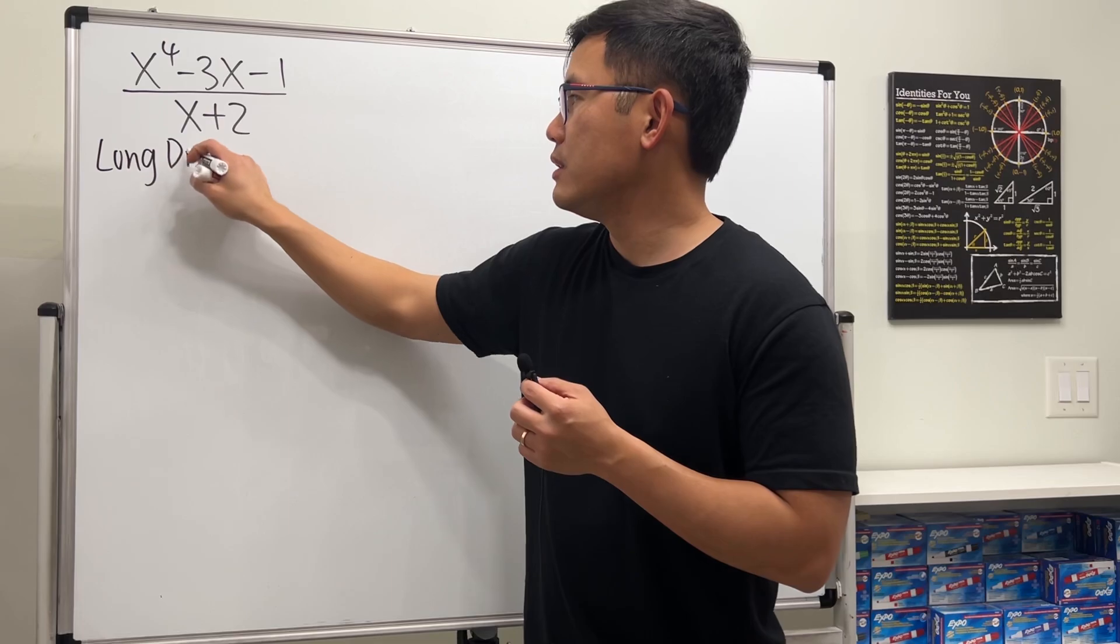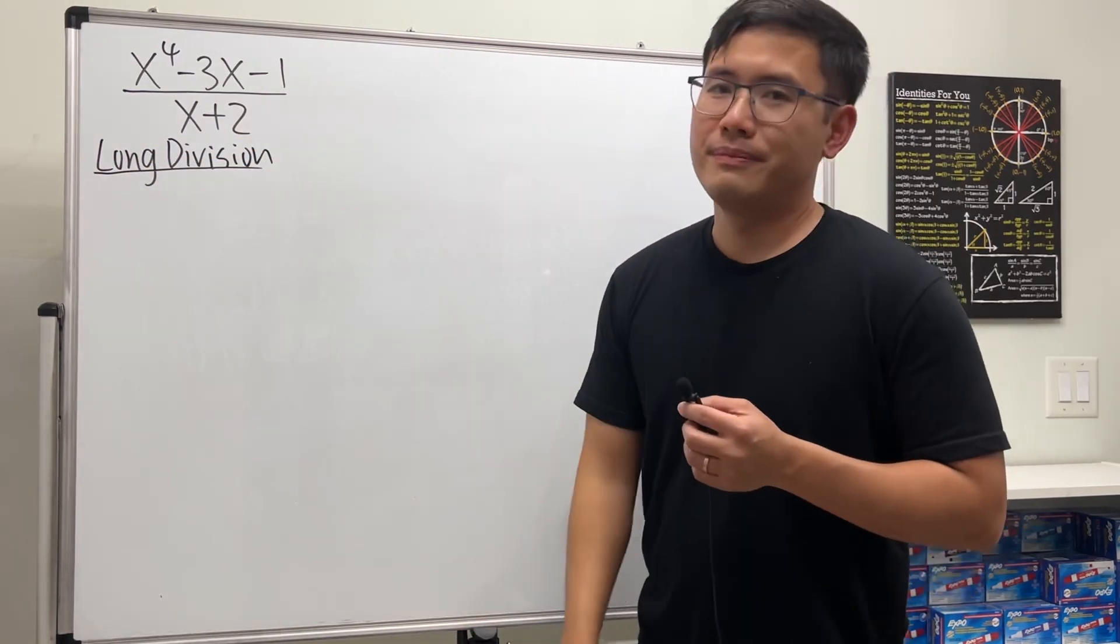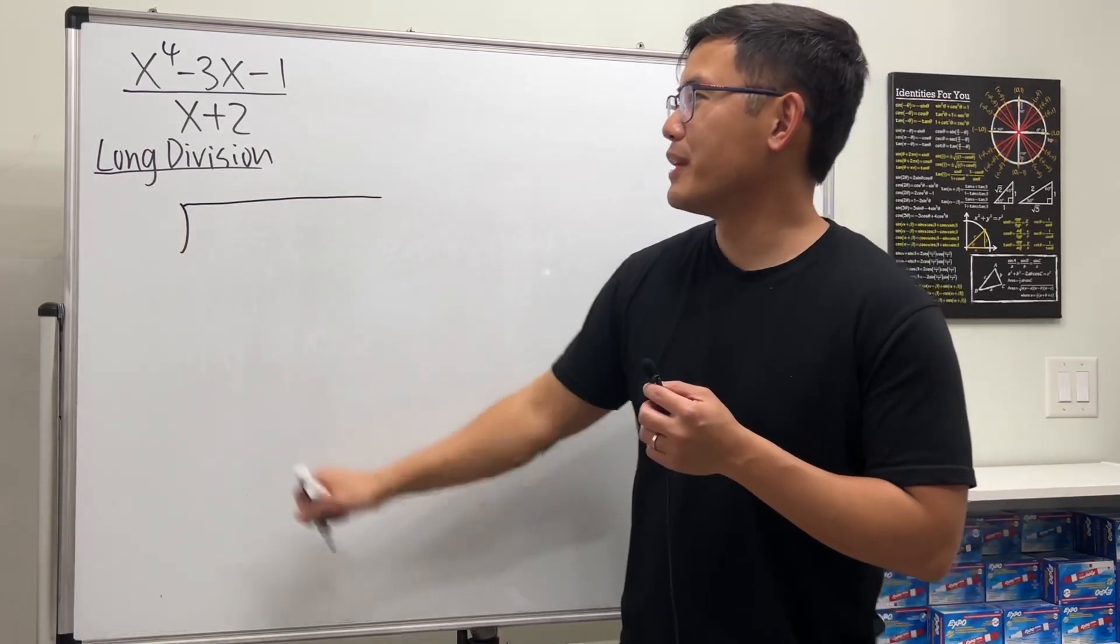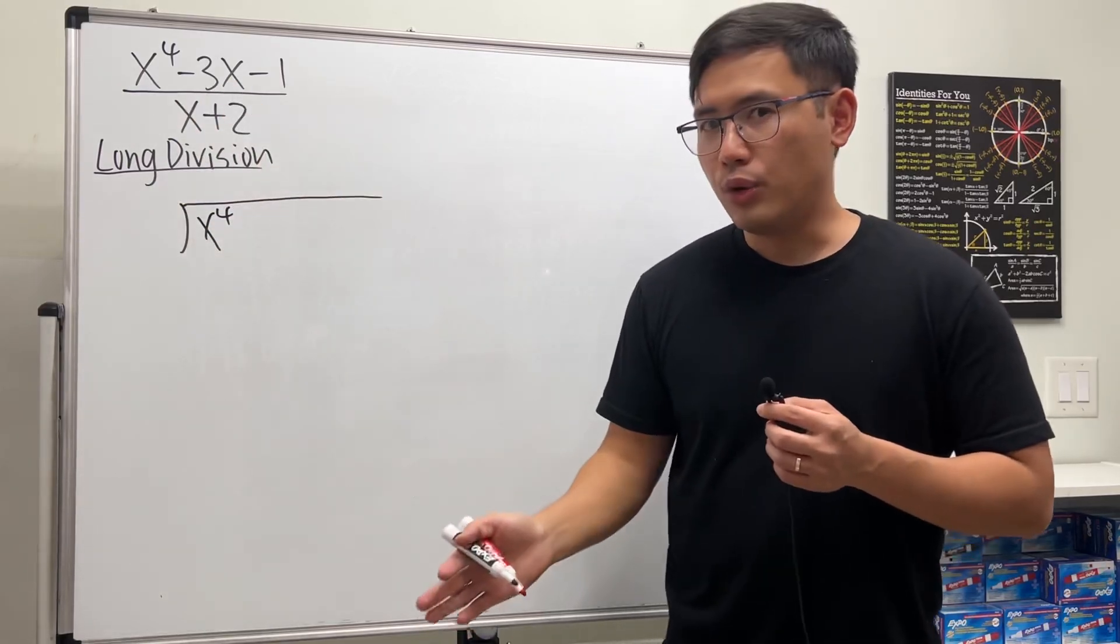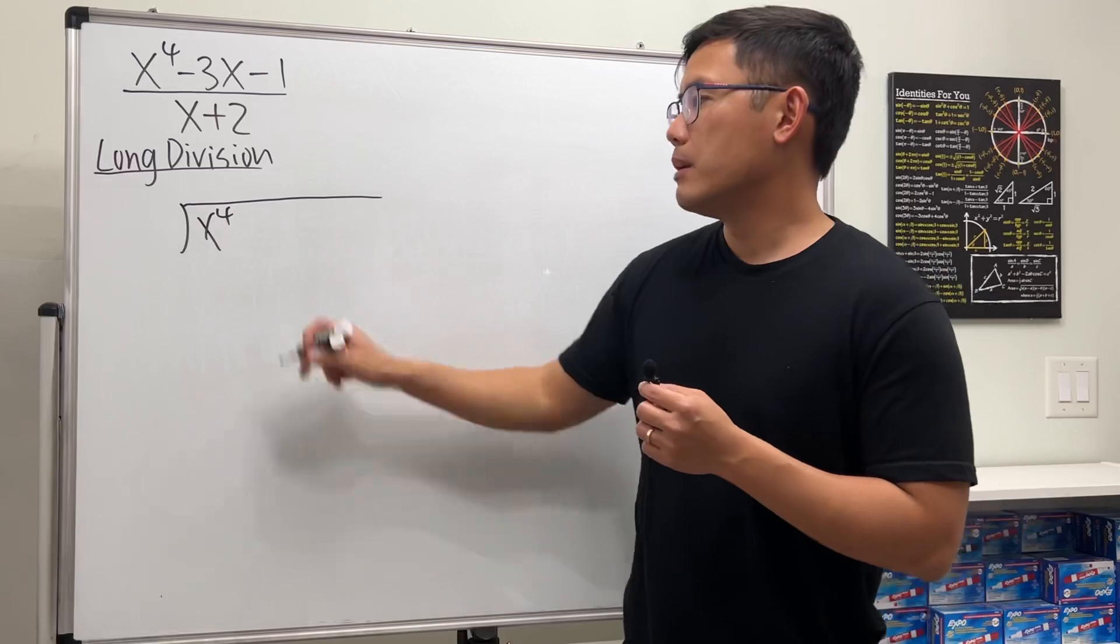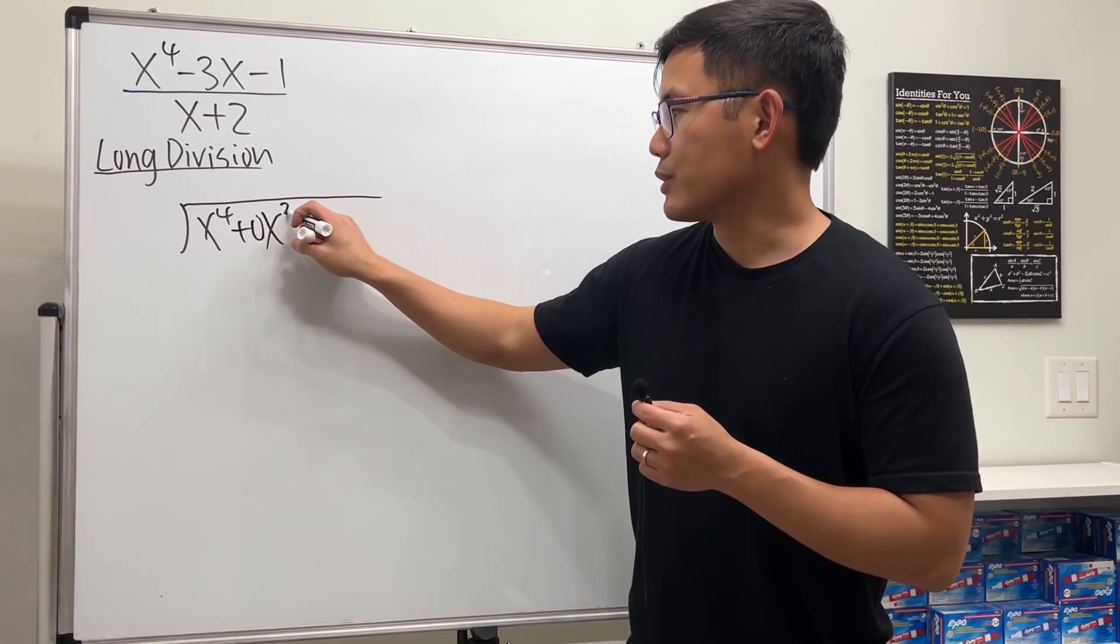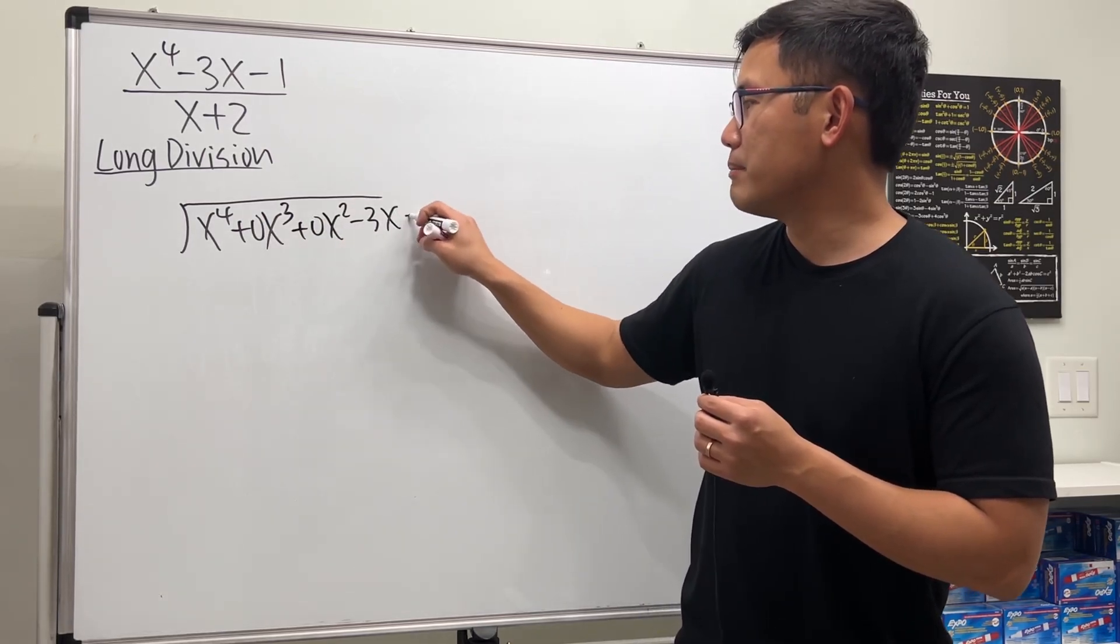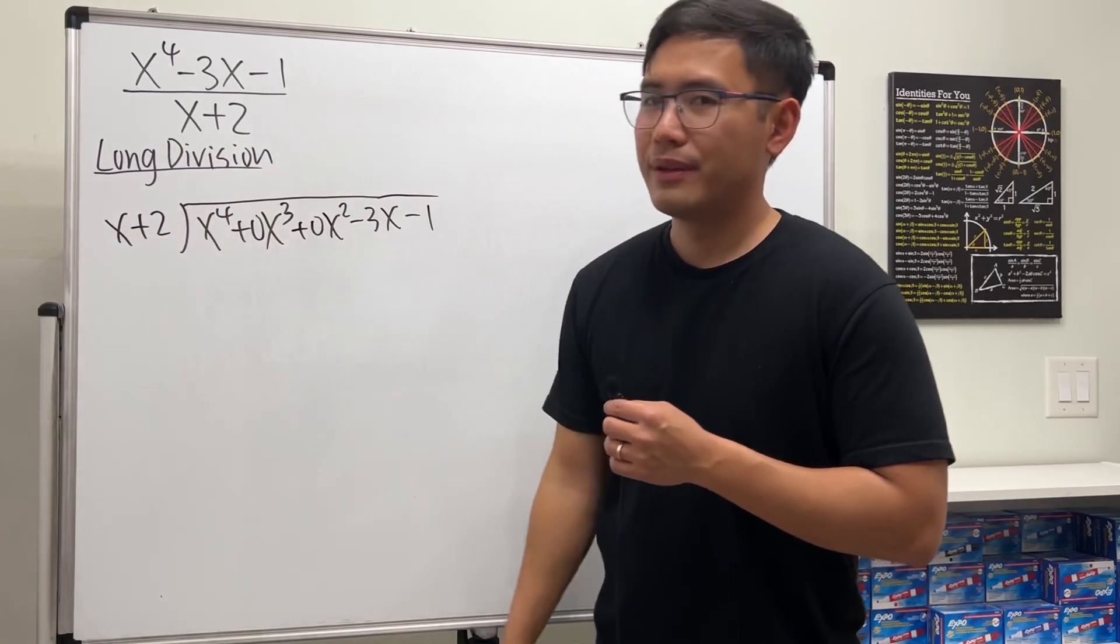First, long division. And here we go. Just go ahead, draw the long division bar, the good old days. And we put the top inside, which is x to the fourth power. And there's no x cubed and there's also no x squared. But be sure we include them as well. So plus 0x cubed, plus 0x squared minus 3x and then minus 1. And on the outside, we have x plus 2.